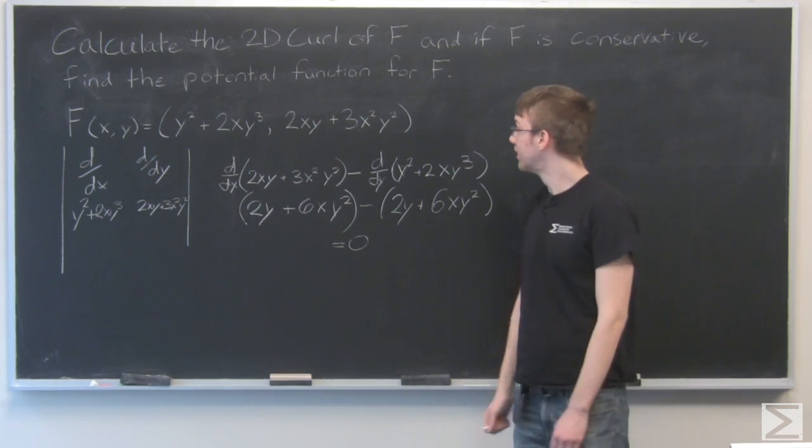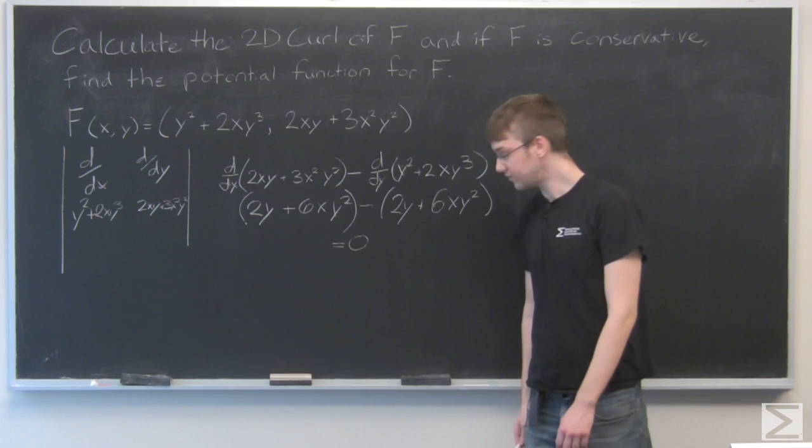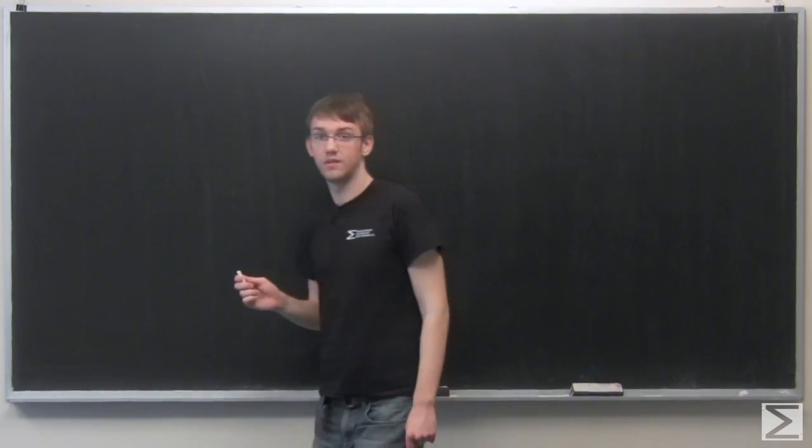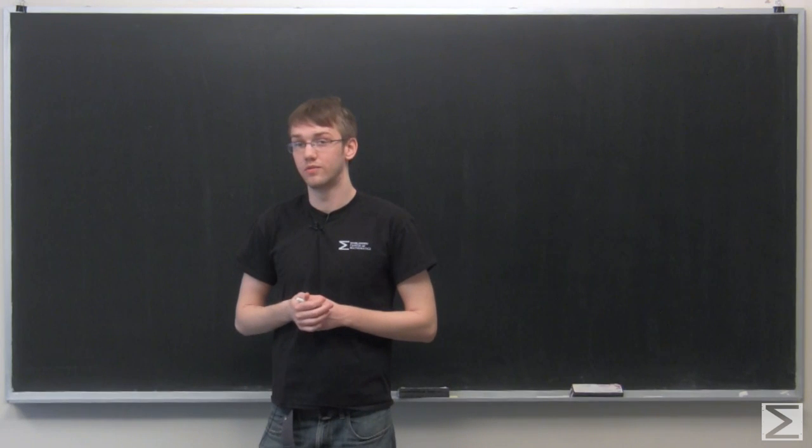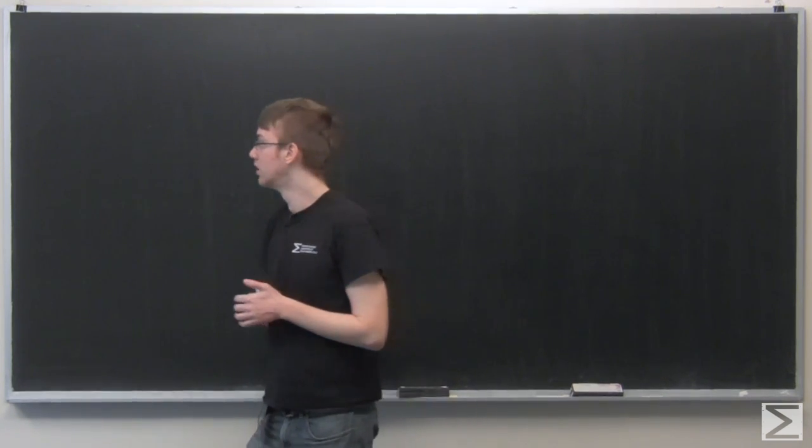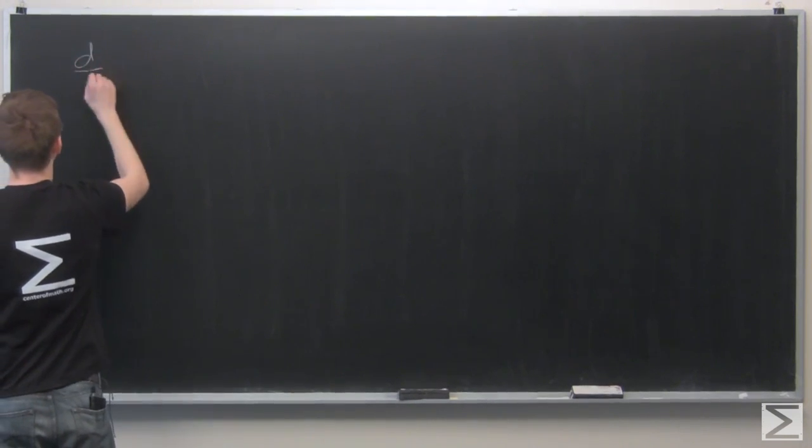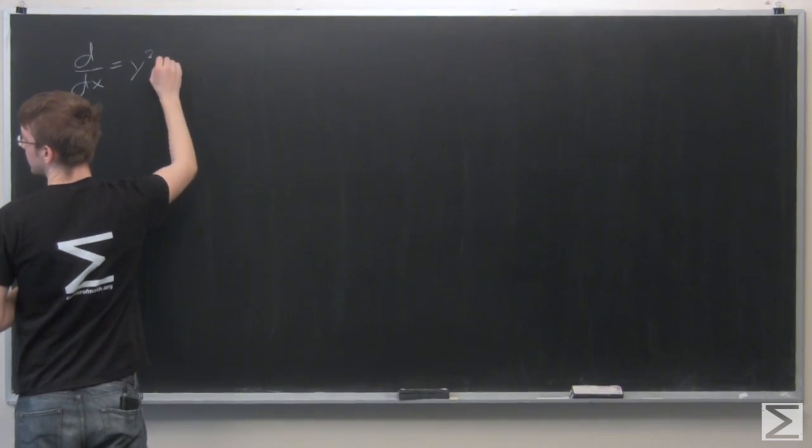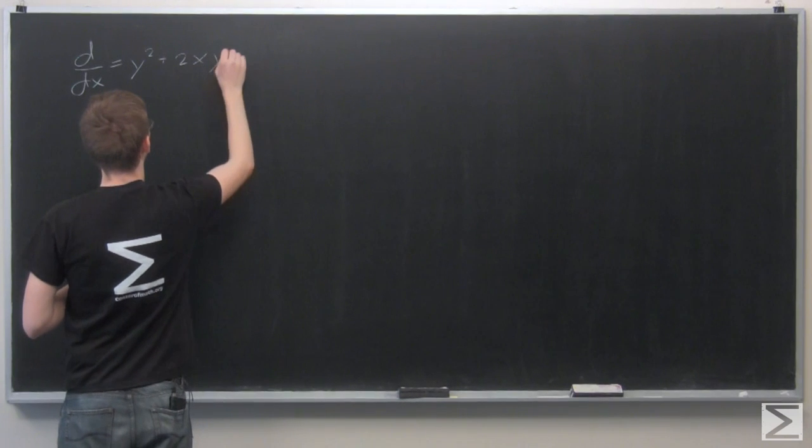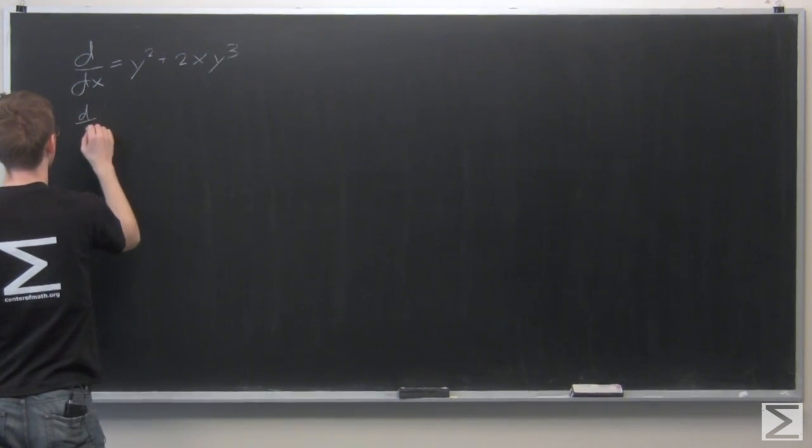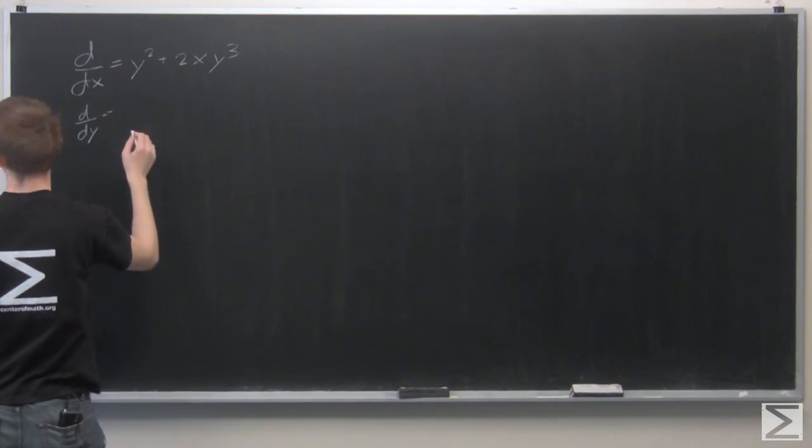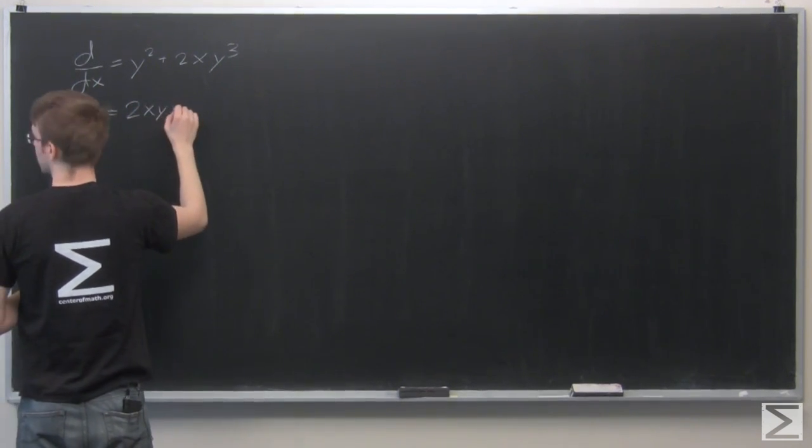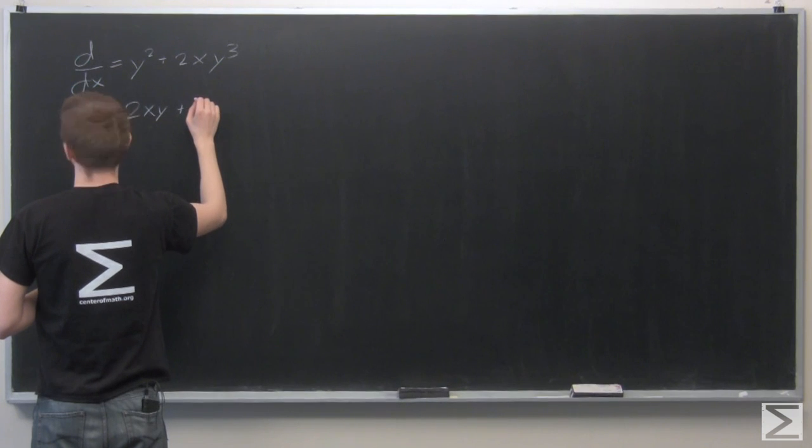So now we need to find a potential function for f. I'm going to switch boards. So we'll start by writing out each of the components of the vector field in terms of d/dx and d/dy. So this is the i component, which was y squared plus 2xy cubed. And here's the j component, which is 2xy plus 3x squared y squared.